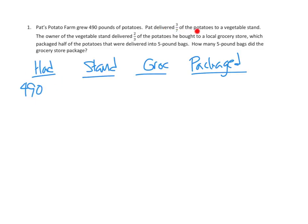Then Pat delivered three-sevenths of the potatoes to a vegetable stand. Okay, so that's three-sevenths of 490. We can solve that any number of ways. We remember that 'of' usually means multiplying. So this is the same as three times 490 over seven. I'm not going to bore you with the tediousness of doing those calculations, but pause and go ahead and do the calculations. That's 210 pounds.